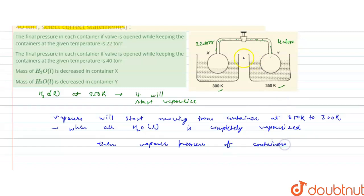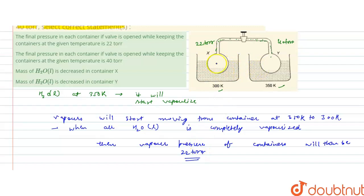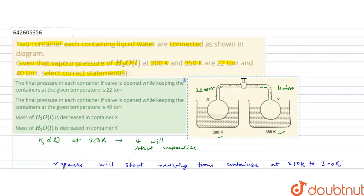The vapor pressure of both containers will then be equal, because all the vapors are present in the container maintained at 300 kelvin. The vapor pressure will be equalized and it is equal to 22 torr when the valve is open. So the first statement — the final pressure in each container if the valve is opened while keeping the containers at their given temperatures will be 22 torr — is the correct statement.